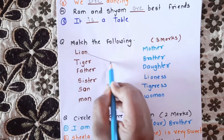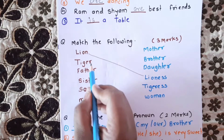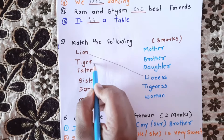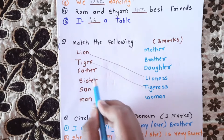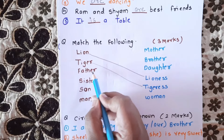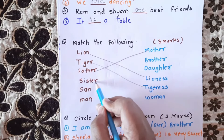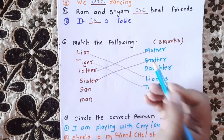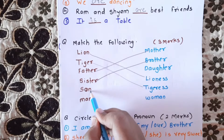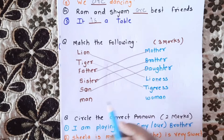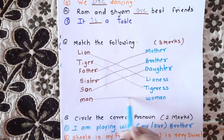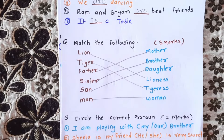Next question covers gender words. Lion — tiger. Father — mother. Sister — brother. Son — daughter. Man — woman.